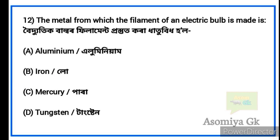Next question: Which metal is used to make the filament of an electric bulb? Option D: Tungsten. The metal used to make the filament of an electric bulb is Tungsten.